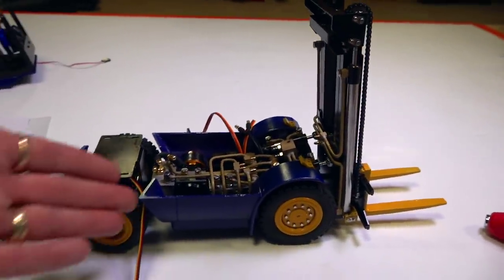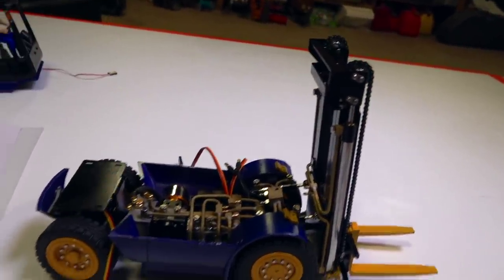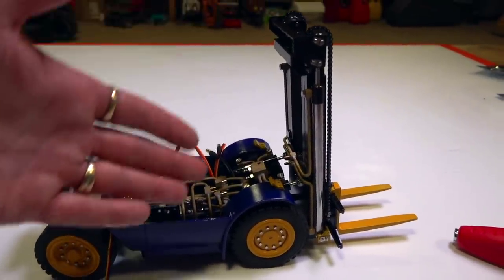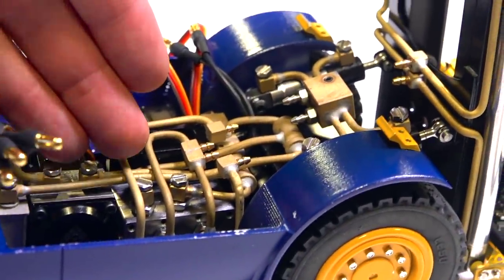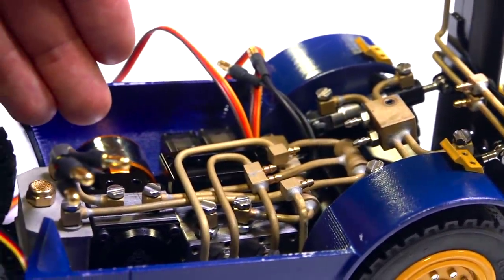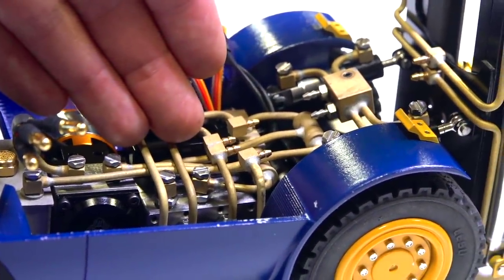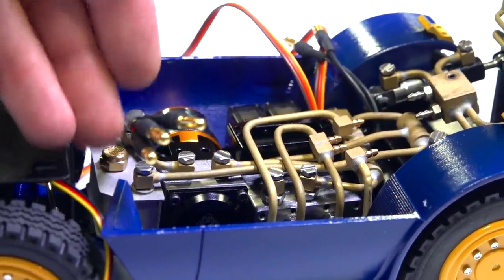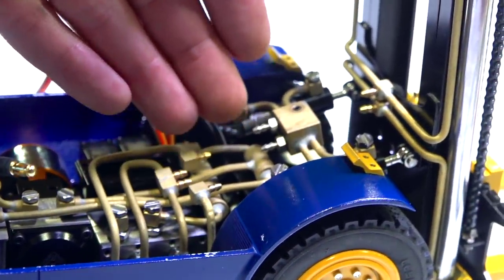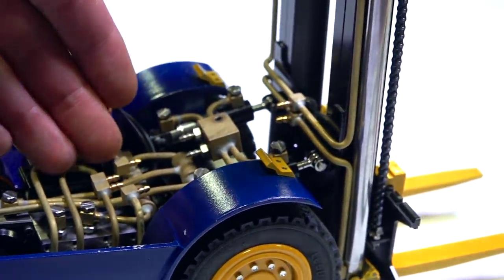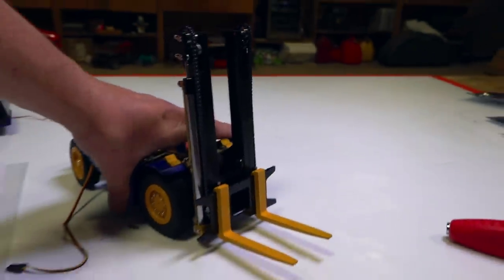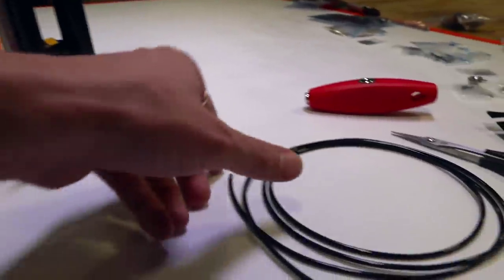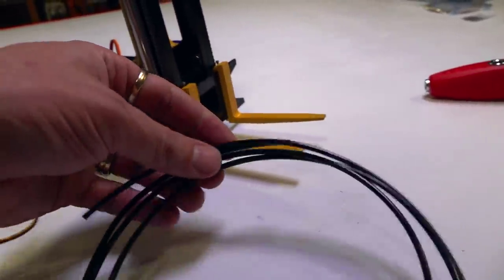So the next thing, if you guys have not been watching this build series, this is a Lesu all metal hydraulic forklift. I just finished in the last episode putting in the motor, the servos, the hydraulic block, the tank right here in the back, all the beautiful brass highlights and brass tubing. I installed the mast that we built earlier. And like I said, now it's time for the small tubing.